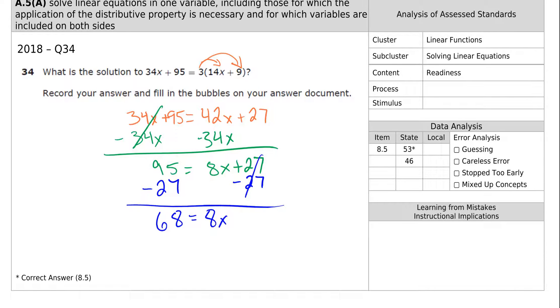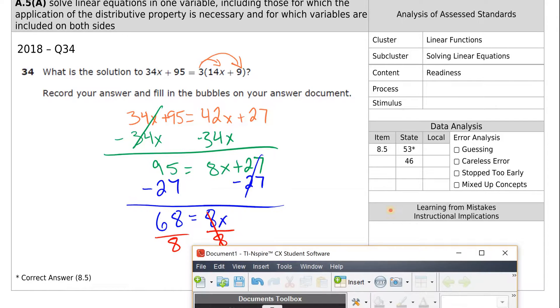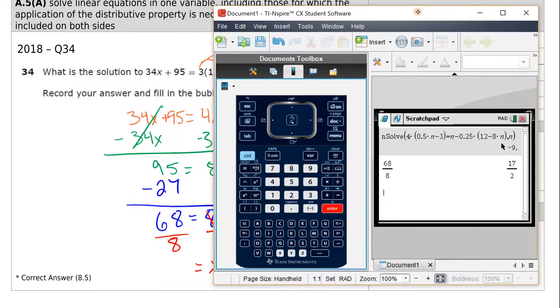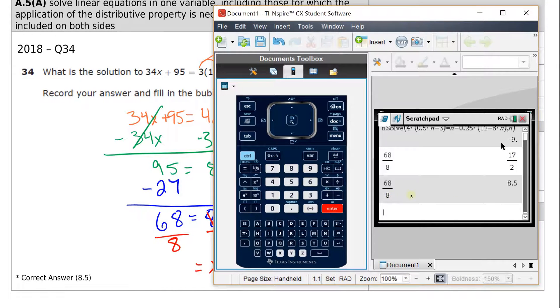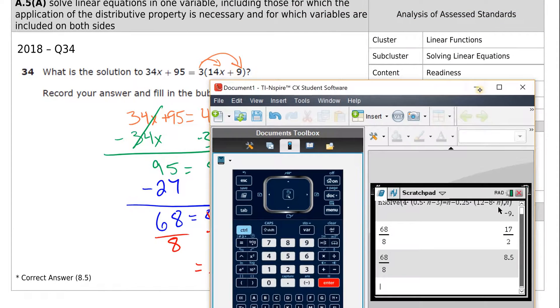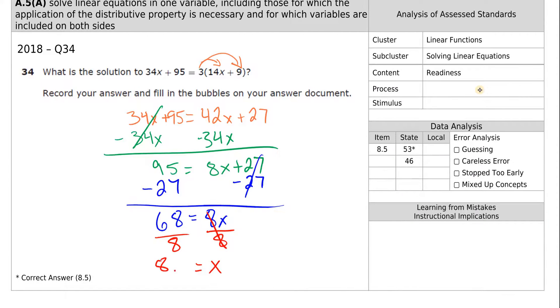The only thing left on this side is 8x. Last step, get rid of the coefficient. Right now it's multiplying times the x. So to get rid of it, we're going to divide. Divide by 8, divide by 8. It gives you a fraction in your calculator. You remember you hit control, enter. That converts it into a decimal, 8.5. That's the answer.